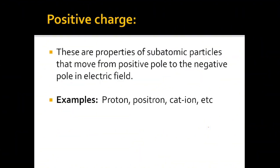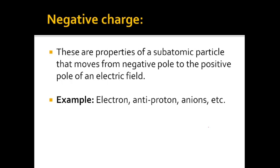Let's look at positive charge more critically. When you say positive charge, this is the charge of a body that moves from the positive pole to the negative pole. Any particle that always moves from the positive terminal or pole to the negative pole has the property called positive charge. Examples of such particles are proton, positron, and cation — a body that lost electrons.